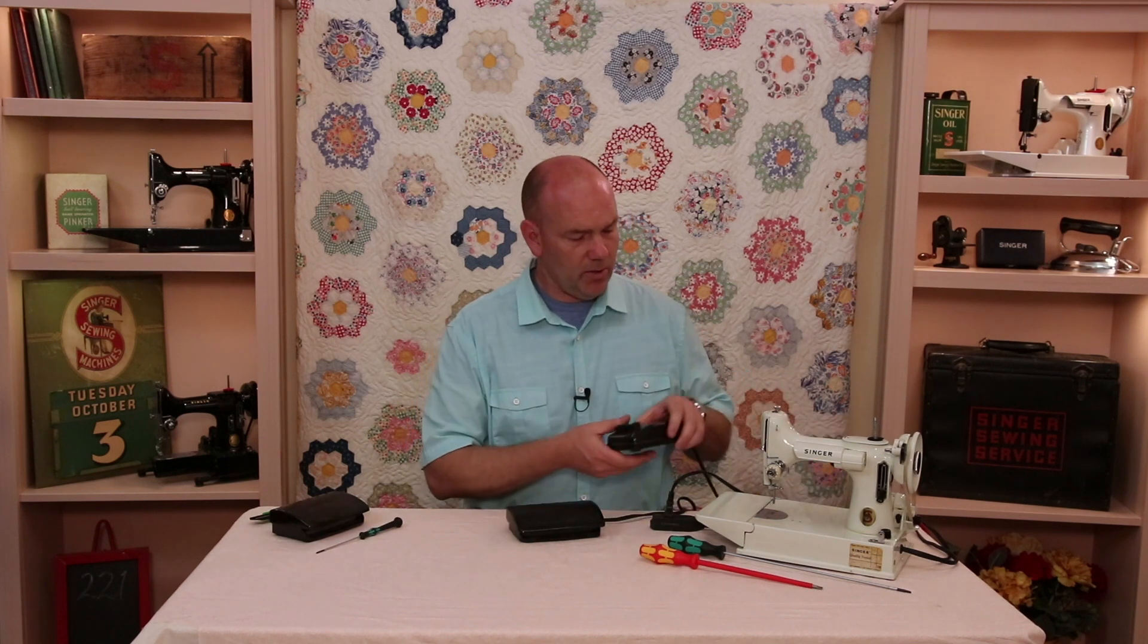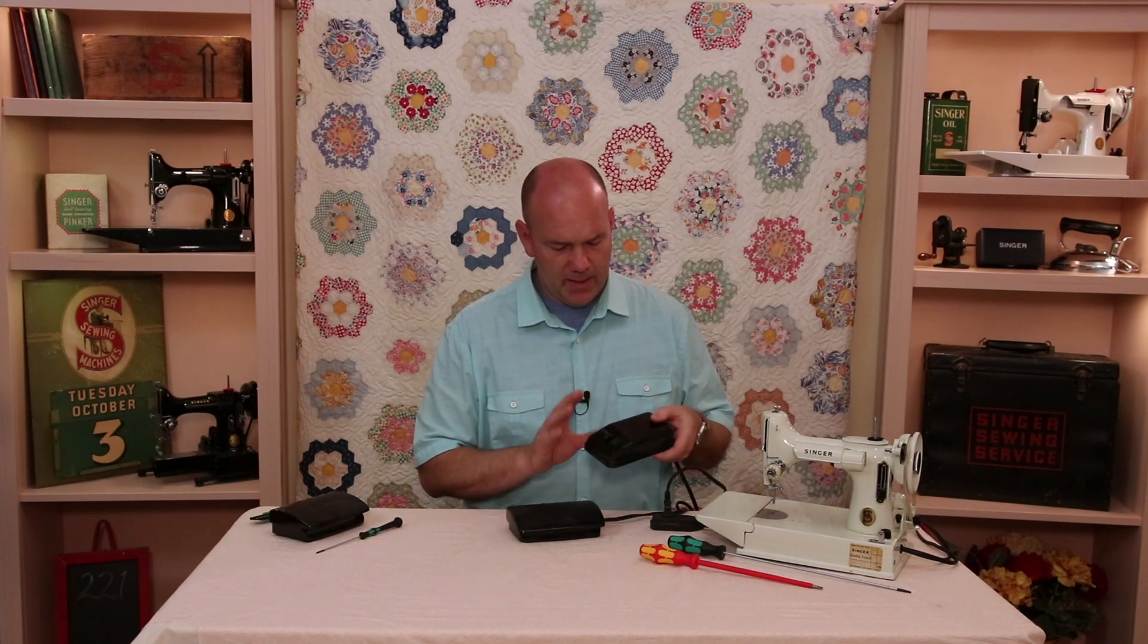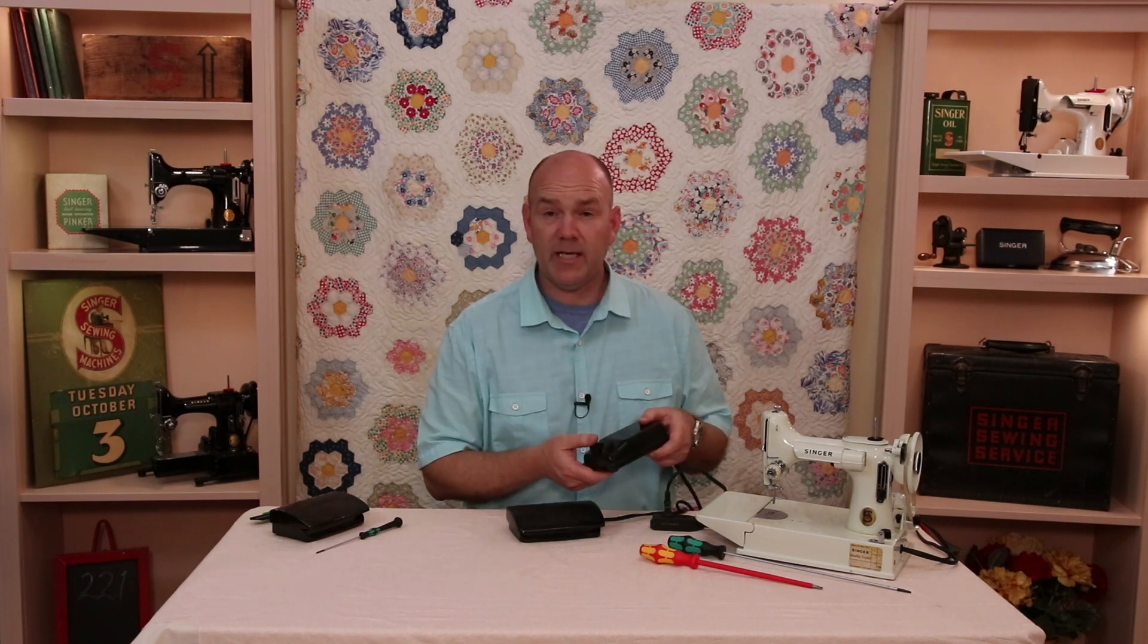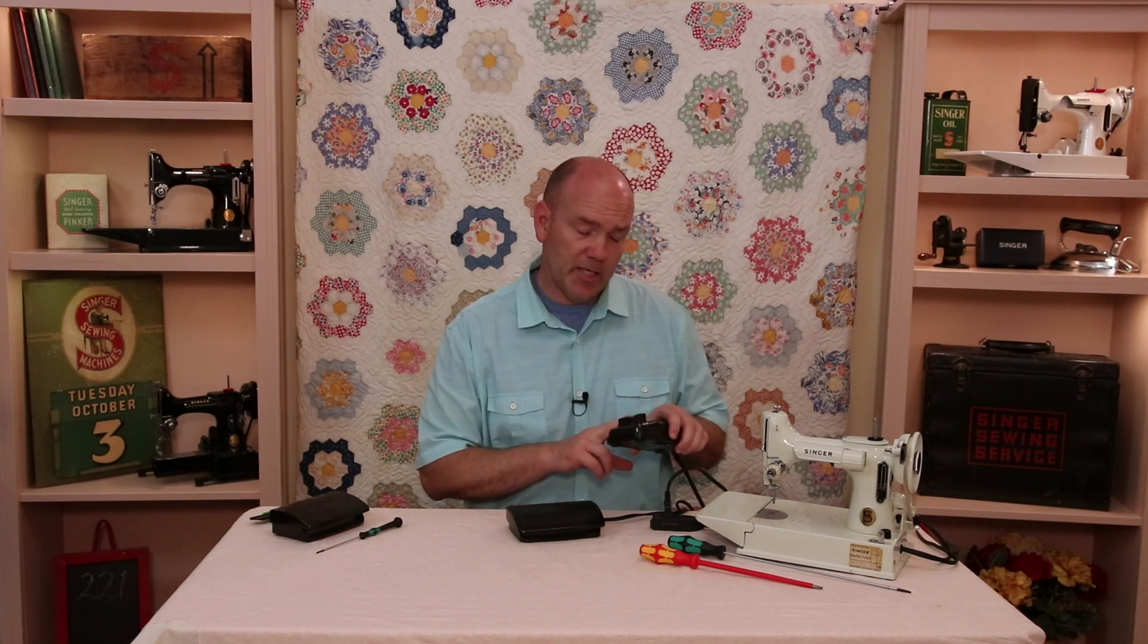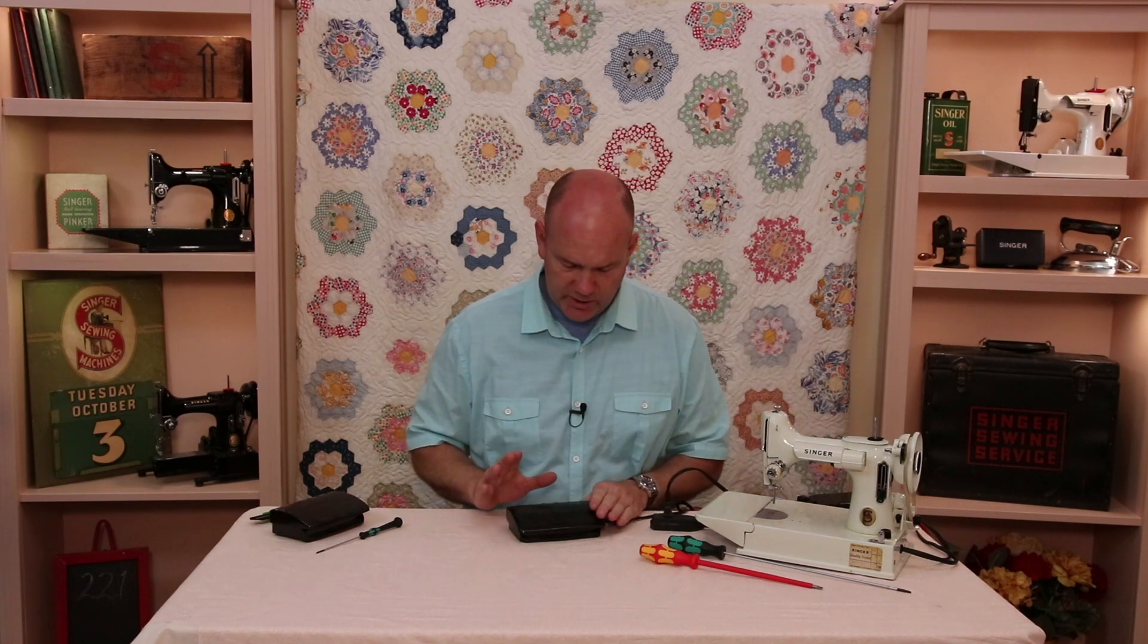The early ones, the early white featherweights, had just this button foot controller just like most of your black featherweights had. And we already have a video on this particular one and how to adjust it. It's in the schoolhouse section of the website if you haven't watched that one.